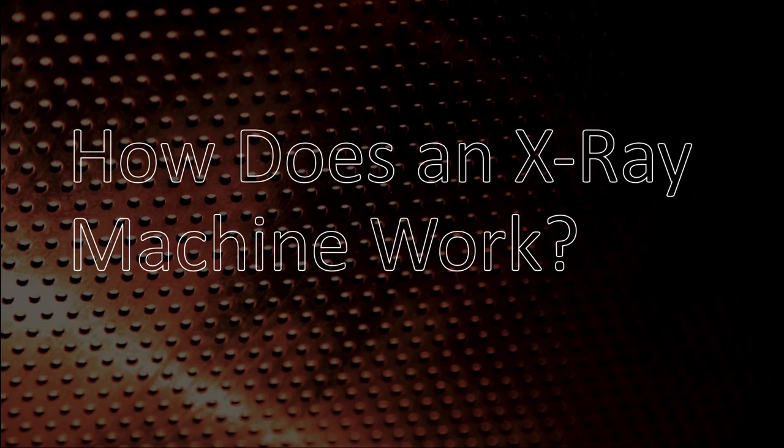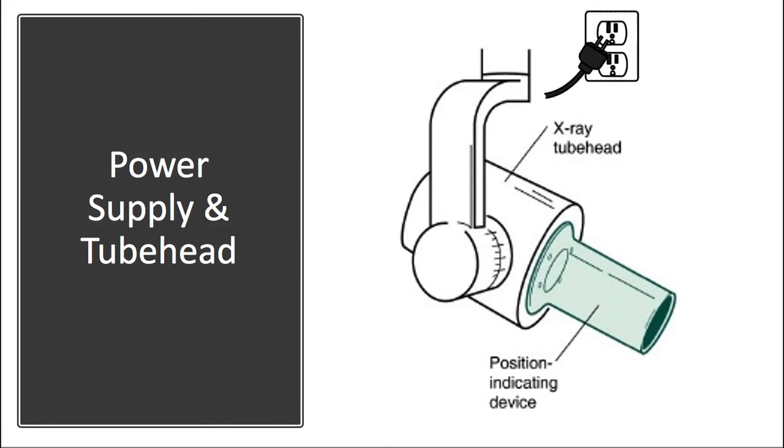So first we're gonna start with the big picture. How does an x-ray machine work? So we have a high voltage power supply that powers up the x-ray unit. The position indicating device is just a plastic casing that allows you to line up the x-ray unit to the proper location and distance from the patient's mouth.